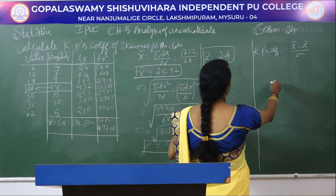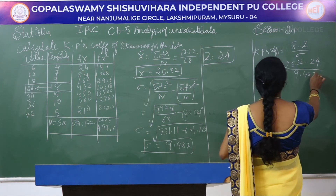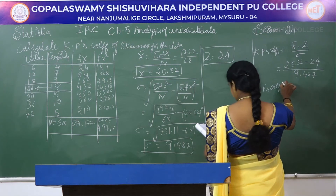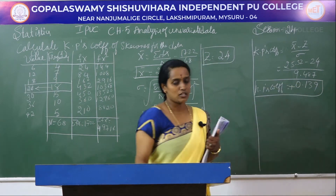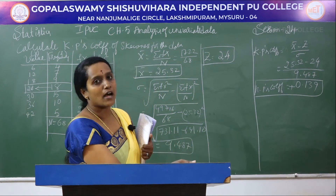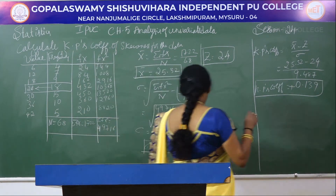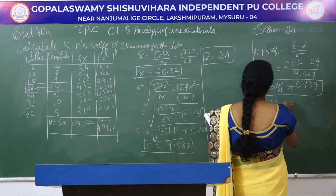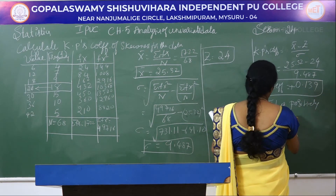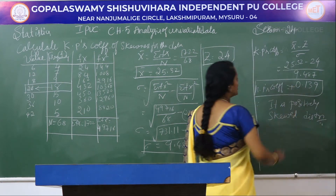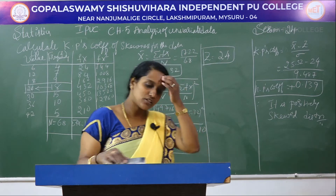Now substitute all these values into KP's coefficient: (25.32 − 24) / 9.487, and KP's coefficient = 0.139. Since this is positive, we write the comment — whether they ask or not, we must write it. KP's coefficient is positive 0.139; therefore, the given data follows a positively skewed distribution.